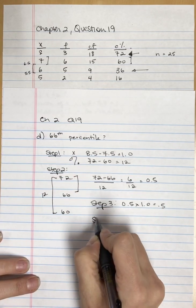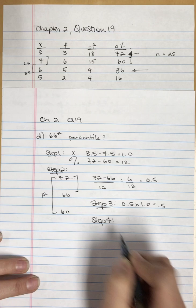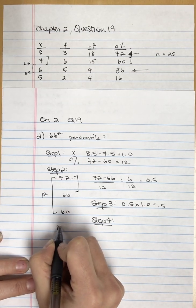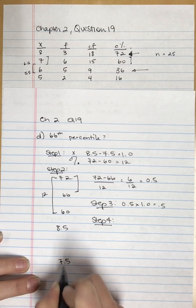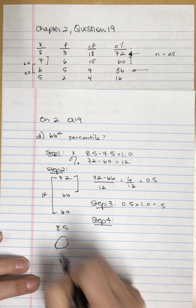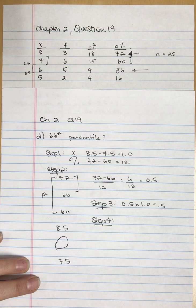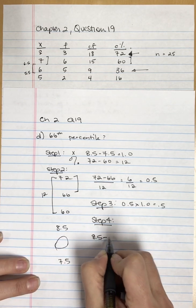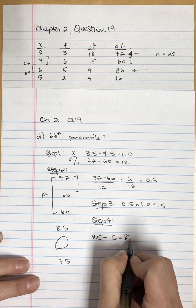For step four, I'm going to go from 8.5, the upper real limit, and 7.5, the lower real limit. I'm trying to figure out what that score is. So I take 8.5 and subtract 0.5, and I get 8.